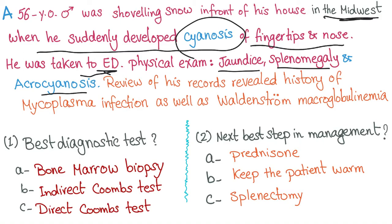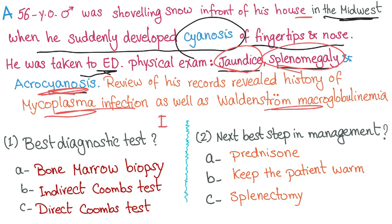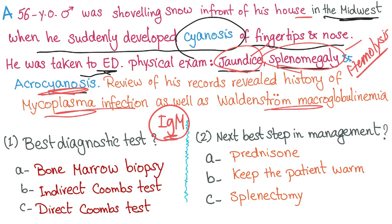Where is the problem here? Acrocyanosis after shoveling snow — could be frostbite or just a reaction to the cold. But there is jaundice, splenomegaly, history of mycoplasma infection and Waldenström macroglobulinemia, all pointing to IgM. When you have splenomegaly and jaundice, this is hemolysis. So now you have hemolysis due to an IgM autoantibody with exposure to cold. This is cold agglutinin disease, or cold immune hemolytic anemia.